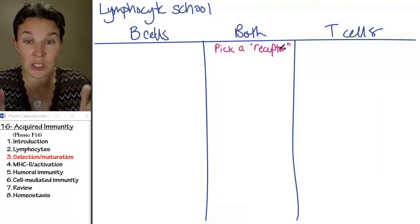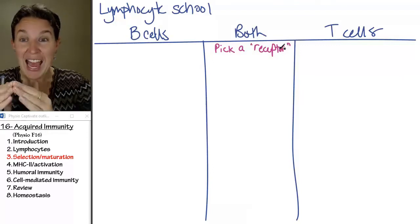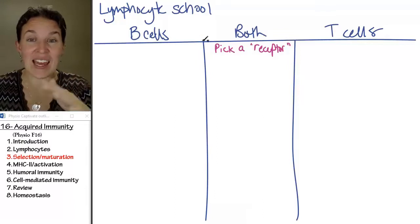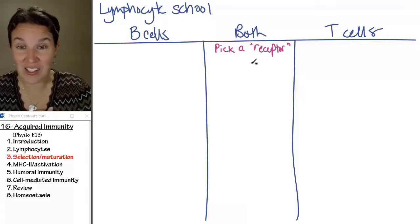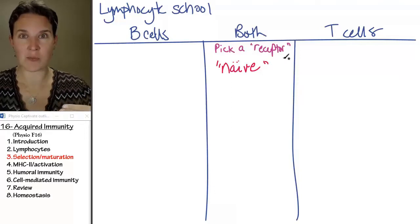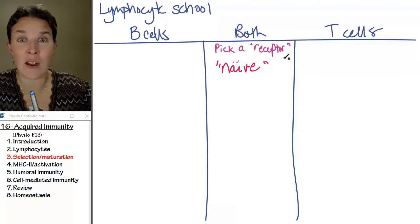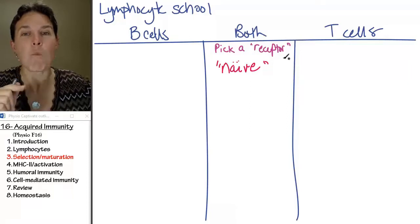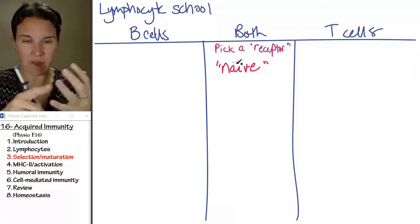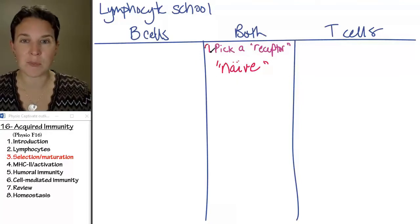The way that this incredible diversity is generated is through gene shuffling. Naïve T cells and naïve B cells are considered naïve, meaning they're not ready to rock yet — they're still babies. But they shuffle their genes and pick their specific receptor. And once they've committed to their specific antibody or T cell receptor, then they go to school. So both of them pick a receptor, they're both considered naïve cells, and then they go to school.